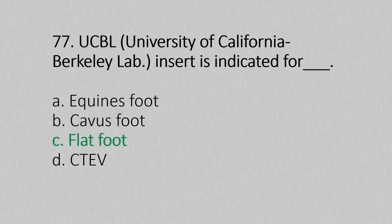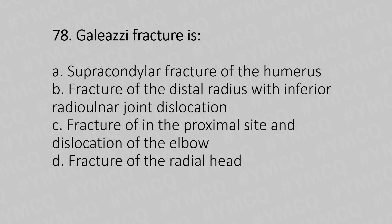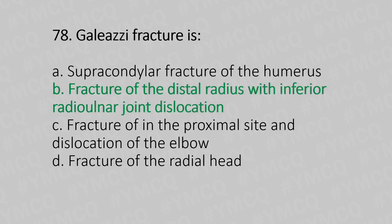Question 78: Galeazzi fracture is — option A: supracondylar fracture of the humerus; option B: fracture of the distal radius with inferior radio-ulnar joint dislocation; option C: fracture of proximal side and dislocation of the elbow; option D: fracture of the radial head. The answer is option B: fracture of the distal radius with inferior radio-ulnar joint dislocation.